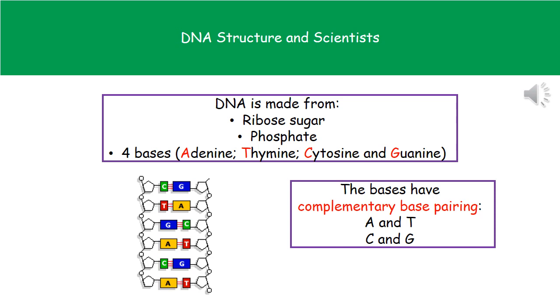The DNA itself is made from three important parts. The first one is the ribose sugar, the second one is a phosphate group, and finally it's made up of four bases. You don't need to remember the full names for these, purely just the letters: A, T, C, and G. You've got to make sure you remember those four letters for the bases.